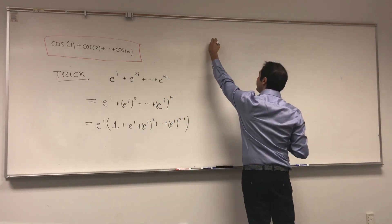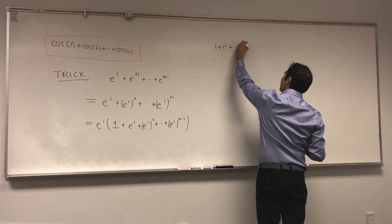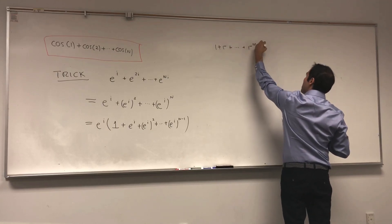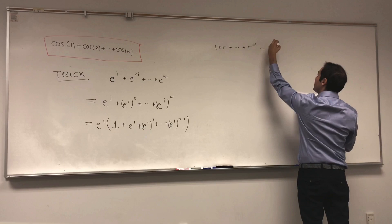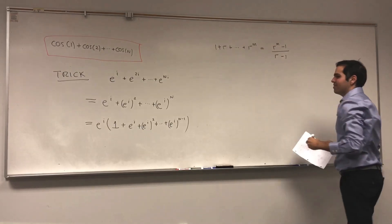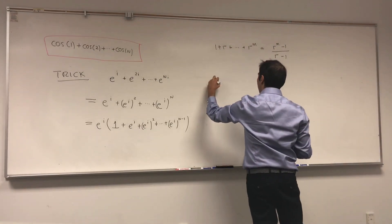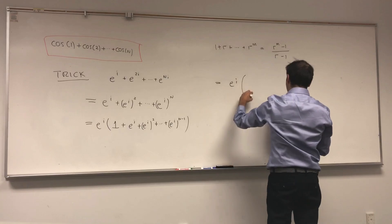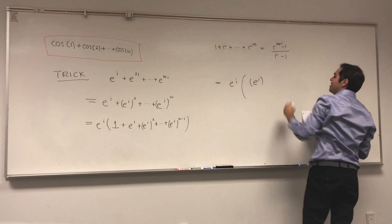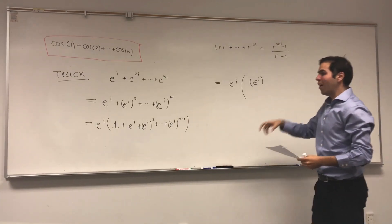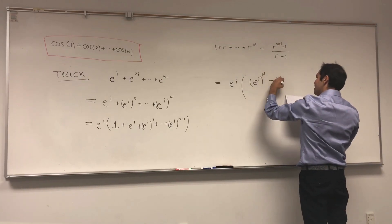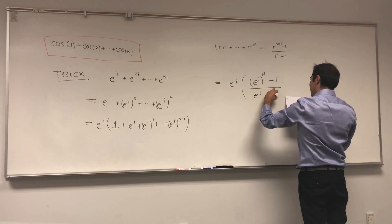And now indeed we can use the formula for the geometric series, which tells you that one plus r plus dot dot dot plus r to the m equals r to the m plus one minus one over r minus one. This tells us the sum becomes e to the i times e to the i n minus one over e to the i minus one.